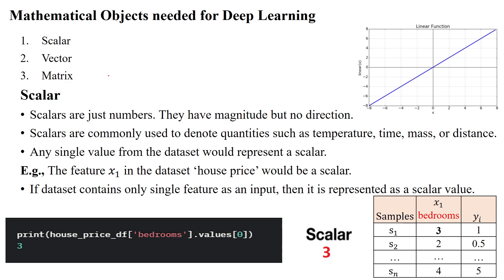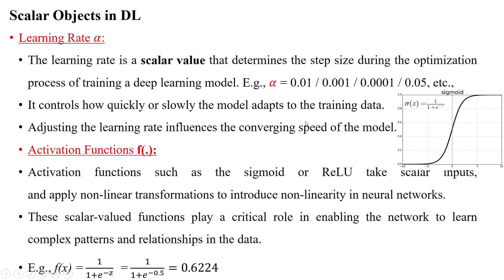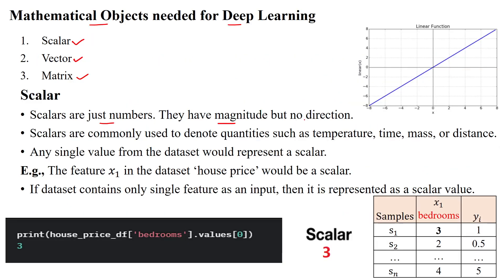Some mathematical objects are needed for deep learning and machine learning. The first object is the scalar, second is the vector object, and third is the matrix object. Scalar objects are just numbers with magnitude but no direction.